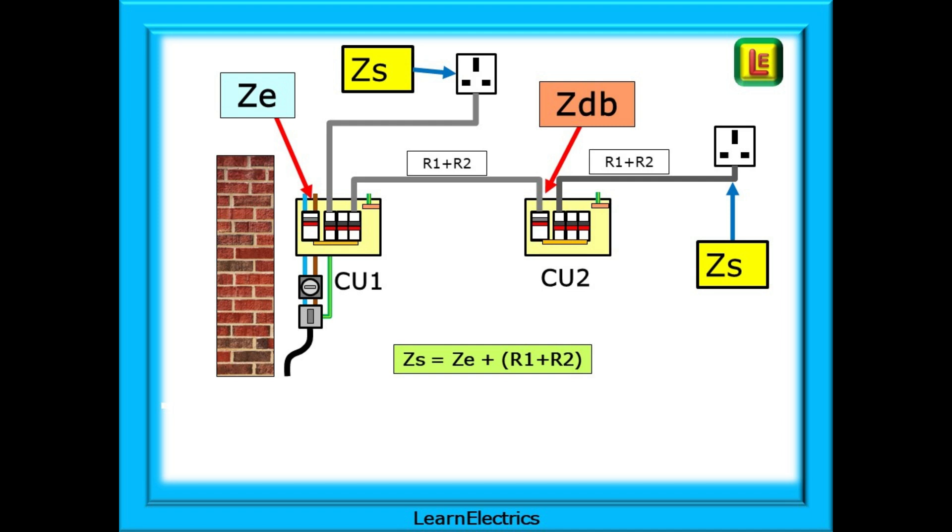We have a ZE at the incoming position and a ZS for the socket circuit. We have a distribution circuit that goes to CU2 and we call this ZDB. CU2 has final circuits with their own R1 plus R2. So ZS for these final circuits will be made up of ZDB plus the R1 plus R2 that comes after the ZDB.